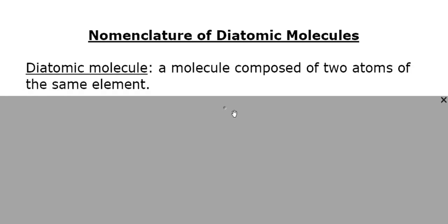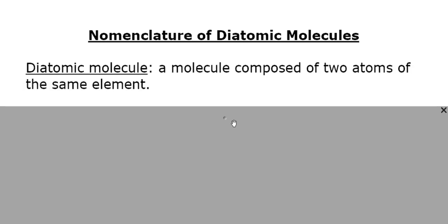Today we're going to continue our discussions on nomenclature and focus on three different types of molecules. First, we're going to take a look at diatomic molecules and how to name them. A diatomic molecule is composed of two atoms of the same element. If you remember our discussion on prefixes, 'di' means two, so diatomic means two atoms in a molecule.